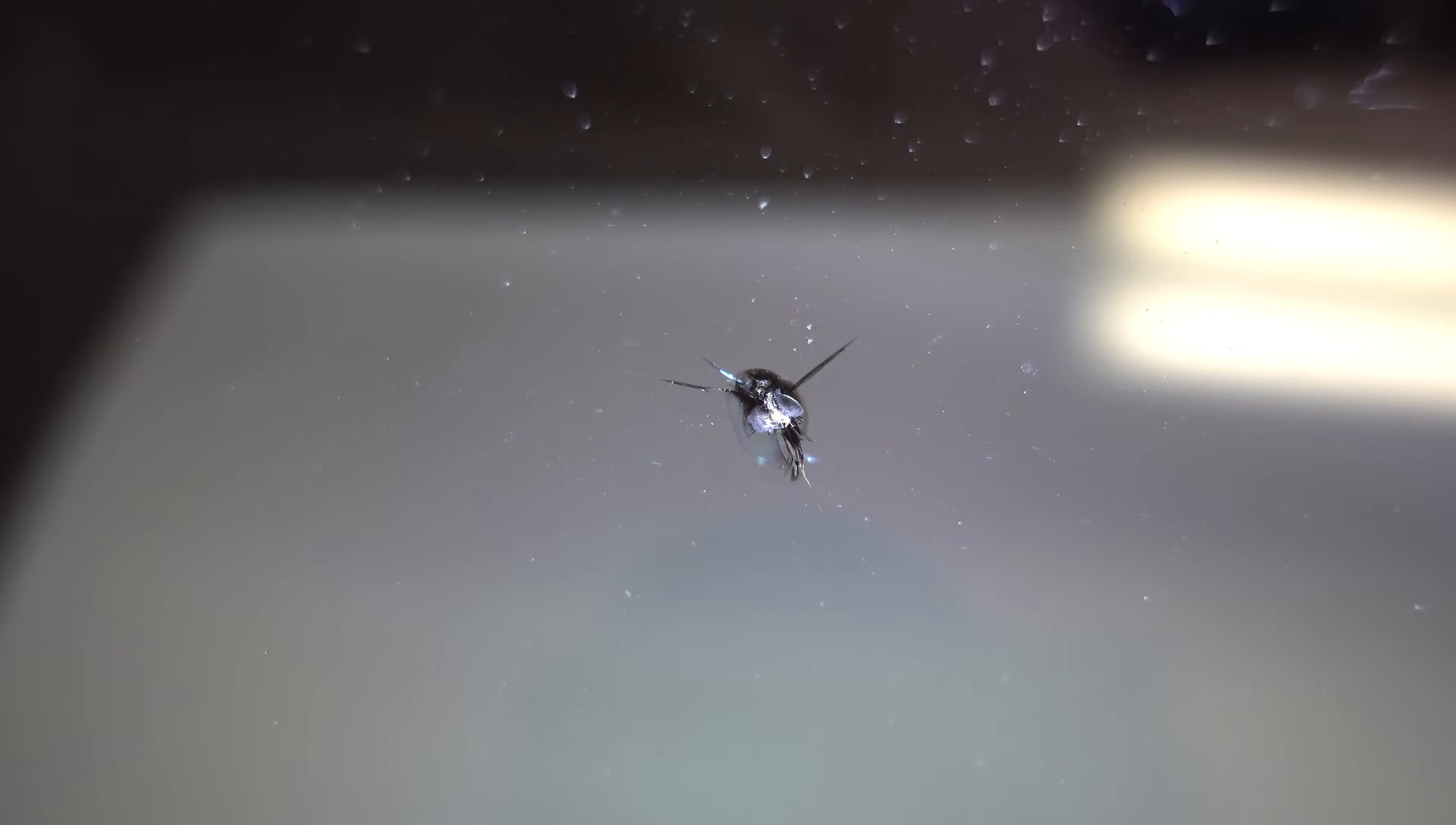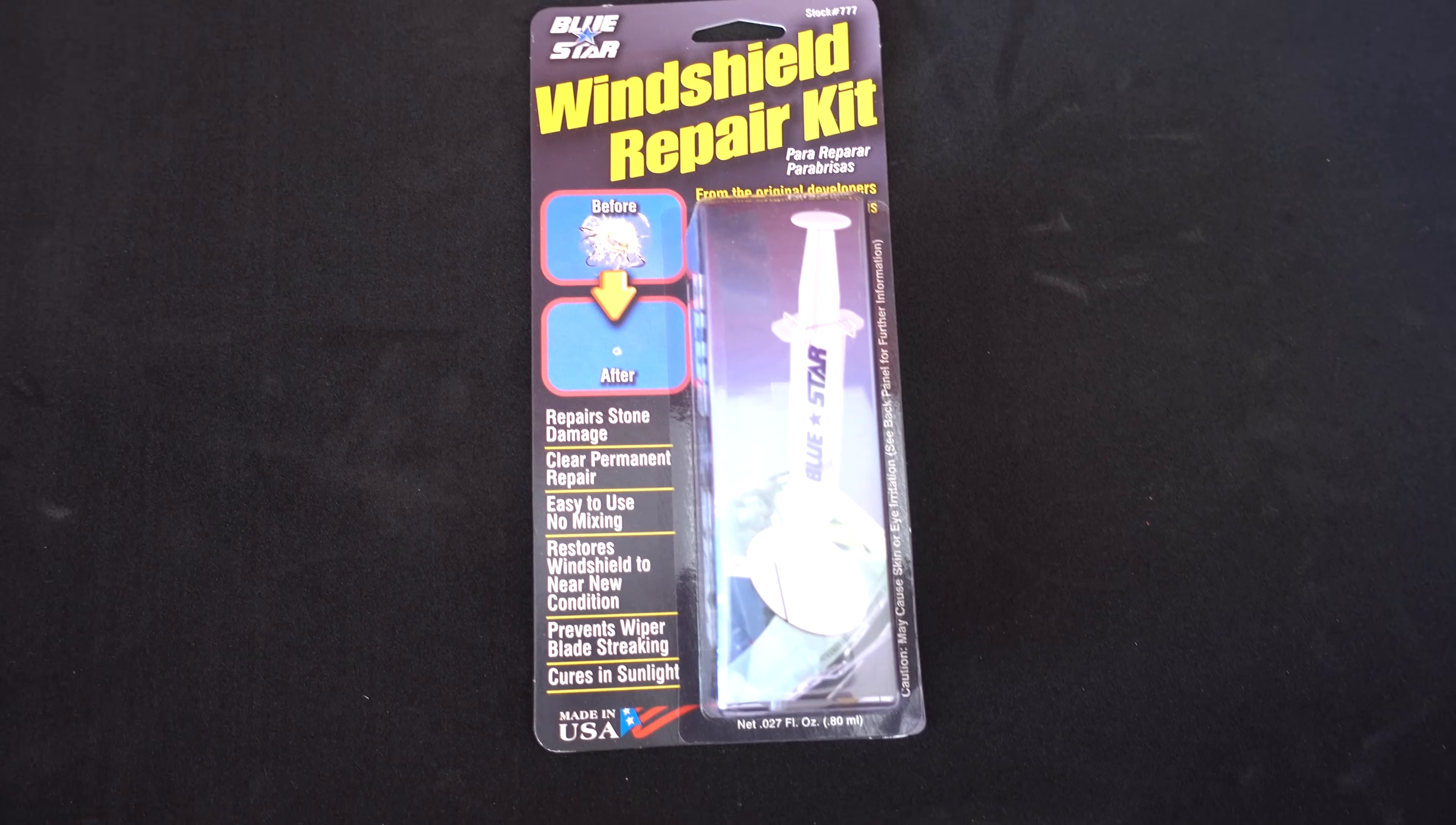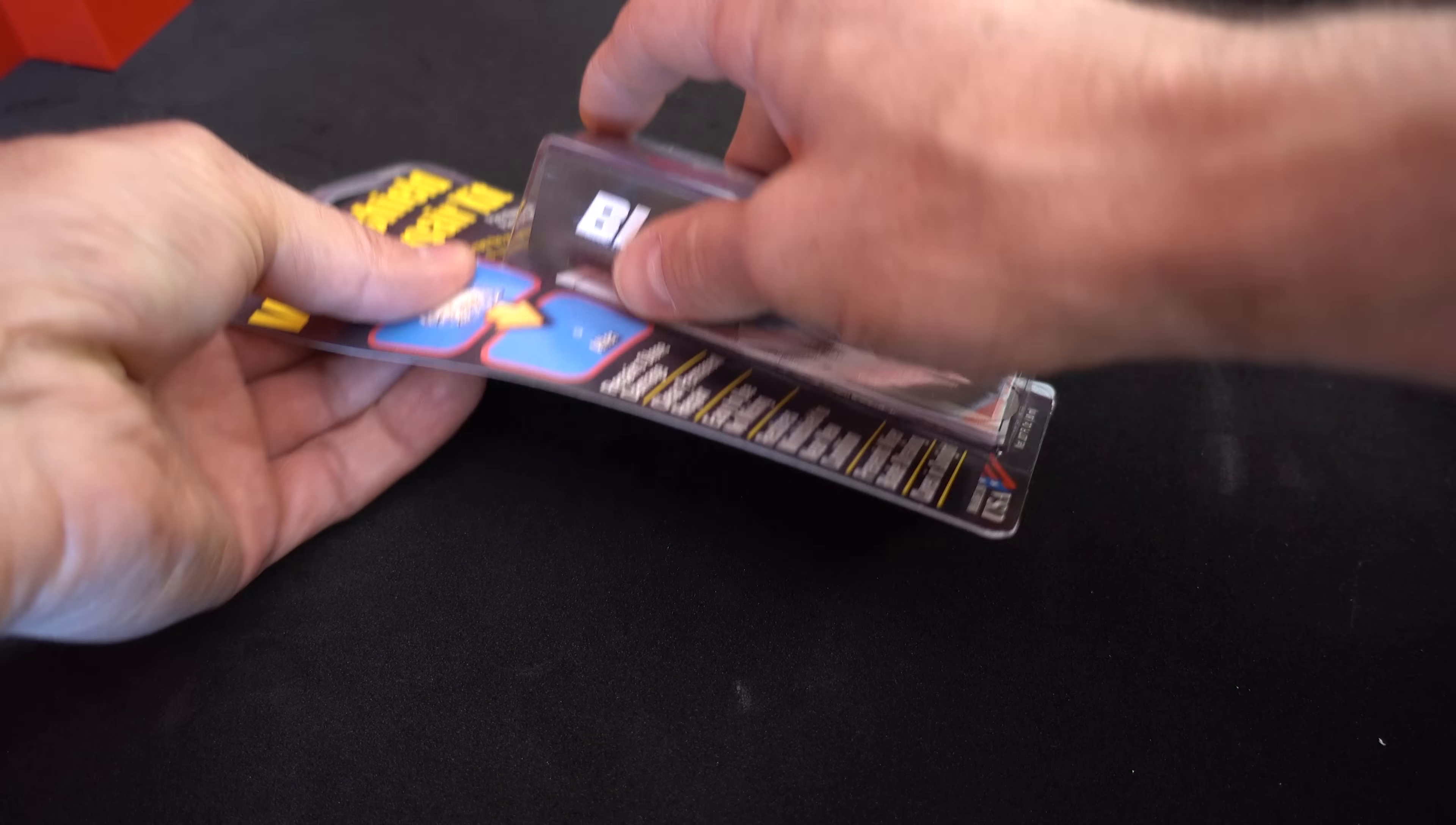If you have a rock chip that looks like this, then follow along to see the steps that I took to fix and prevent it from spreading. There are many products on the market to choose from for this type of repair, but I chose to go with this one. Not only was it the cheapest one I could find on Amazon, but it also says made in the USA. I'll put a link below this video for you to see it for yourself.